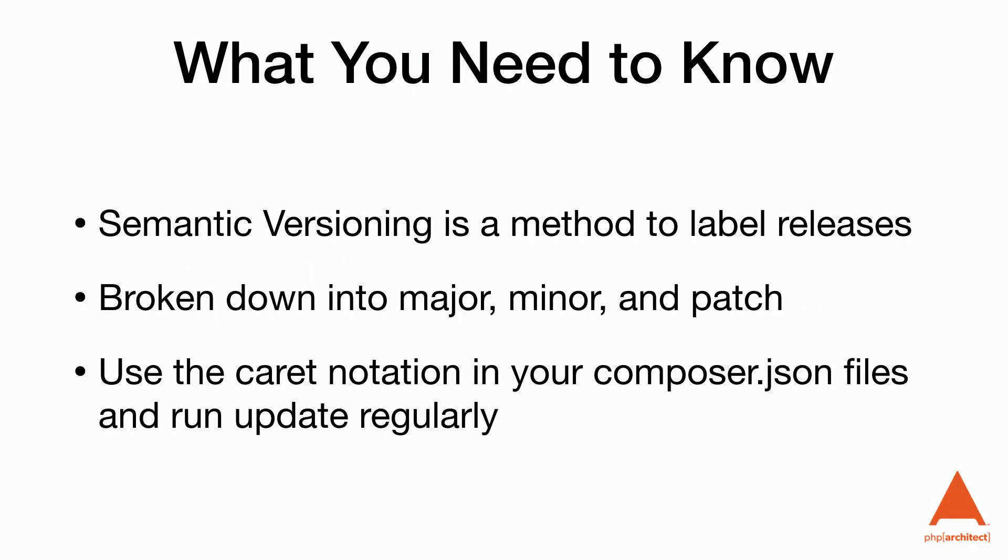To recap, semantic versioning is a method to label releases. It's broken down into major, minor, and patch levels. Make sure that you're using the caret notation in your composer.json file and run the updates regularly. I hope you enjoyed this episode. If so, make sure you subscribe, comment, share, and like, as it does help others find us.